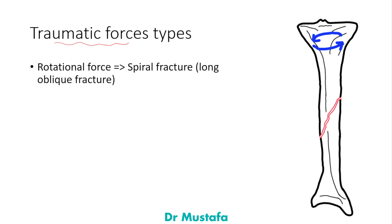Let's start with traumatic forces and how they cause different types of fractures. Each type of traumatic force causes a different fracture pattern. For example, a rotational force causes a spiral fracture, which is also a long oblique type of fracture. If we apply a rotational force to the tibial bone, we get this spiral fracture pattern.